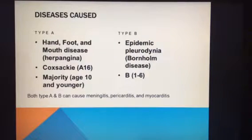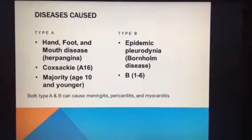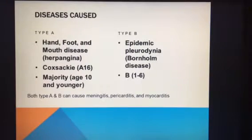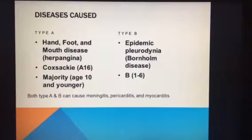In doing the research, I was able to find out that the Coxsackie virus actually causes two different types of illnesses. Type A is the most common, which the majority of people are most familiar with, known as hand, foot, and mouth disease. Sometimes classified as Coxsackie A16, this typically affects children ages 10 years and younger.